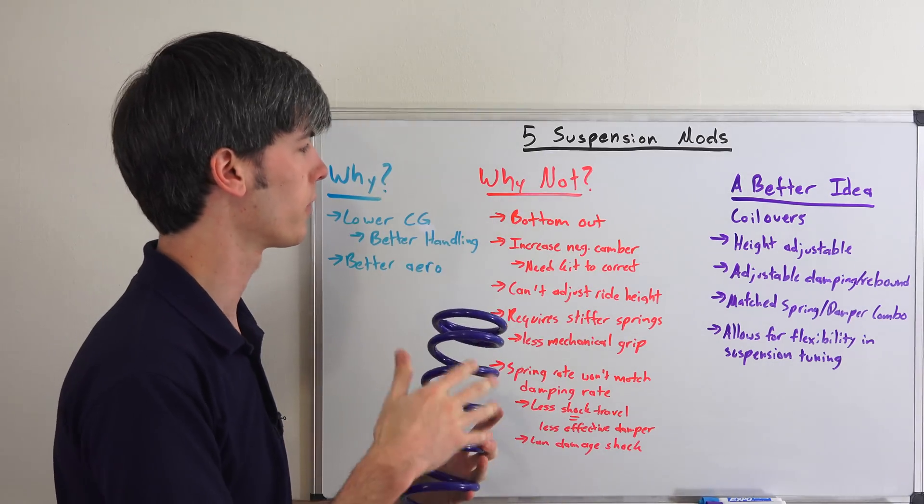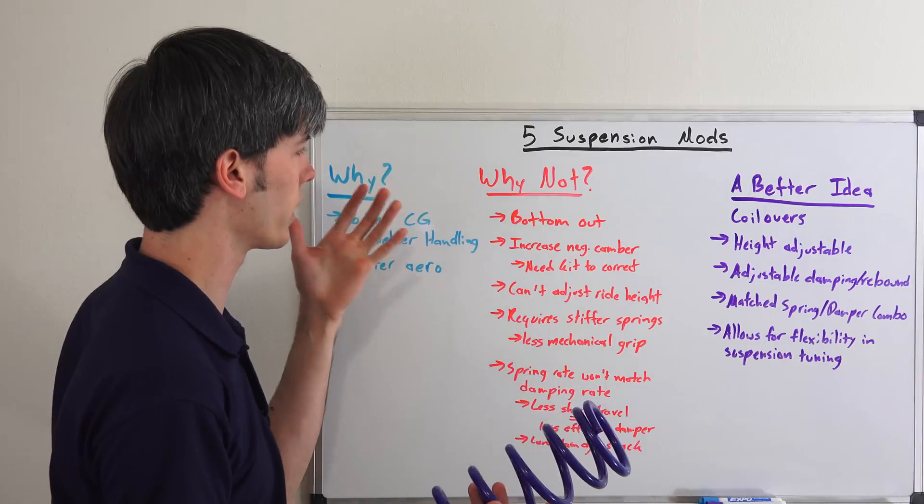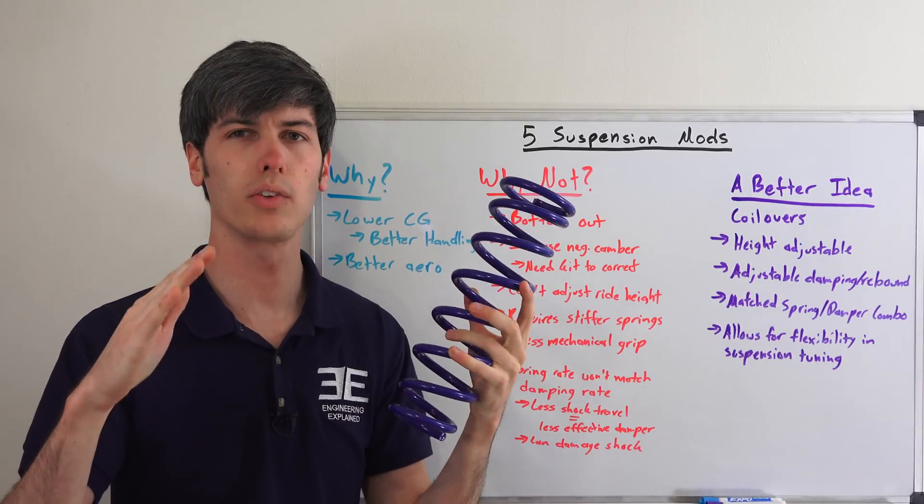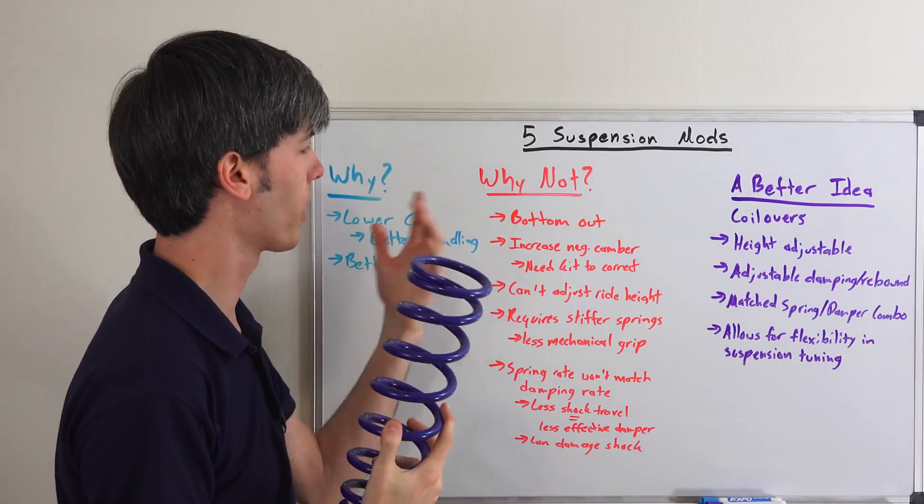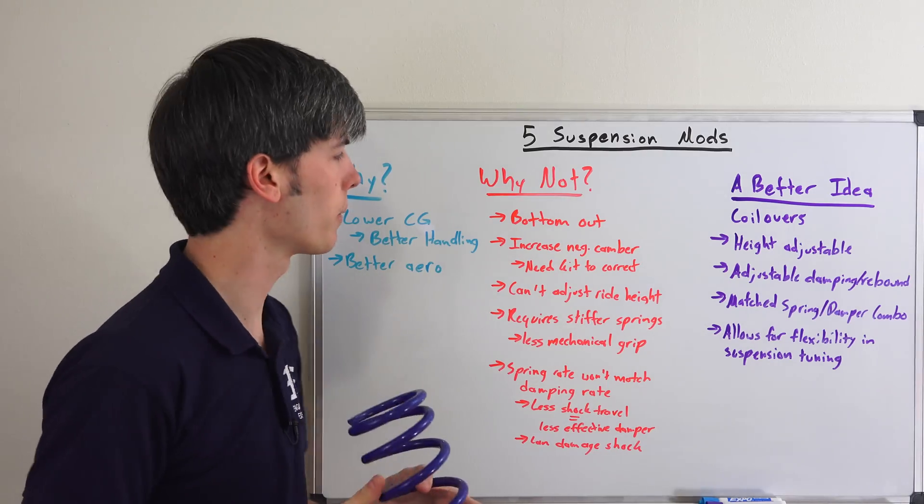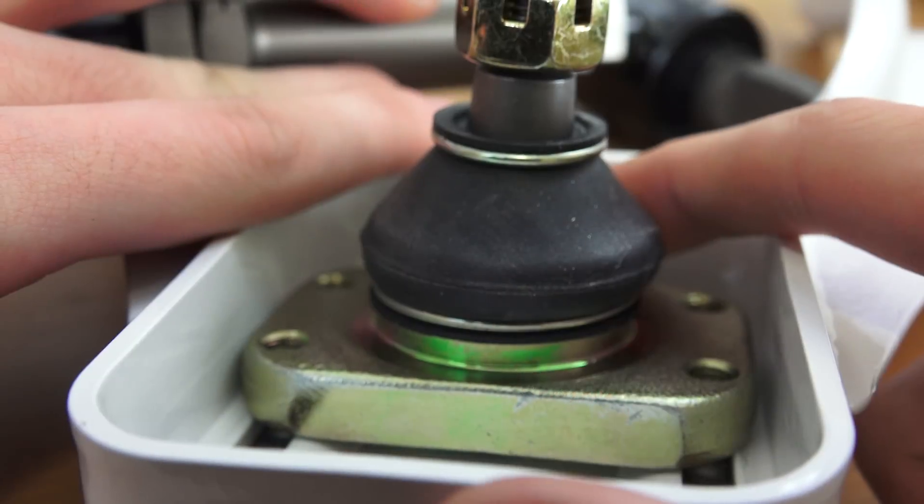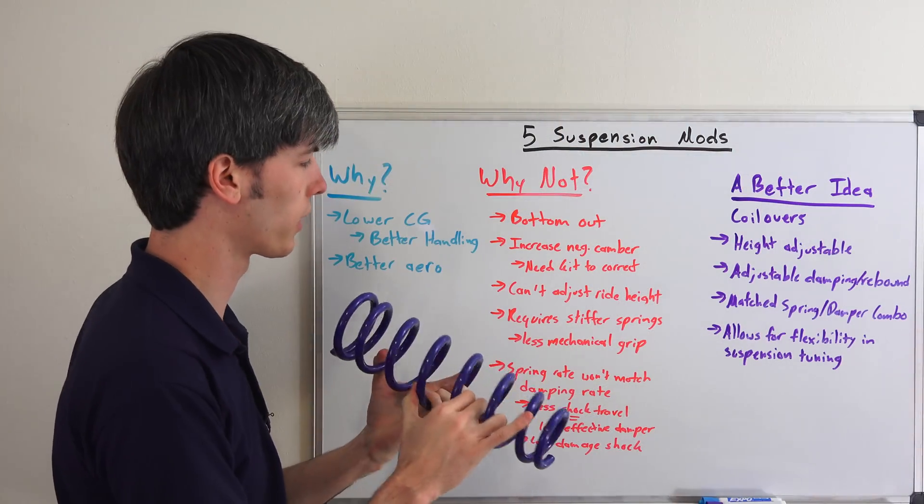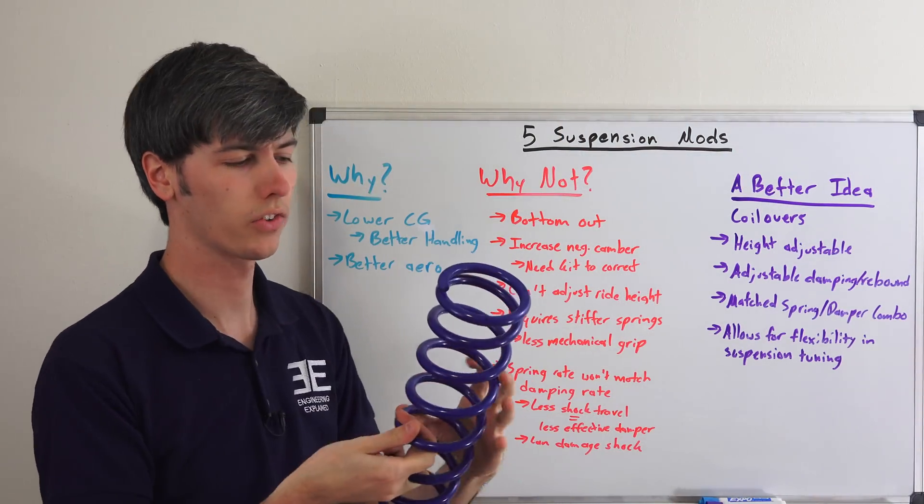These first two simply for lowering your car in general: you're going to increase the likelihood of bottoming out, and you're also typically going to increase the amount of negative camber you have by throwing in lowering springs. This can reduce the amount of grip that you have, or you may need to buy a kit to correct it.